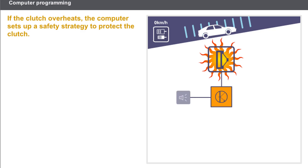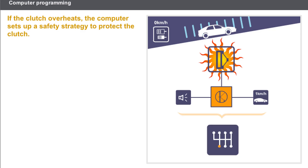The buzzer is activated. The creep function is inhibited. Pulling away in second gear is not authorized. These special actions are maintained as long as the clutch temperature is above the overheating limit.